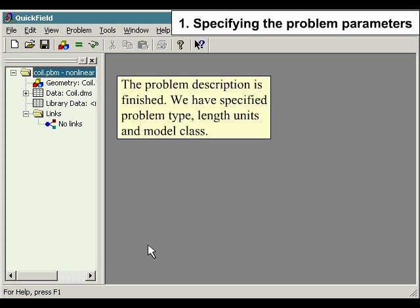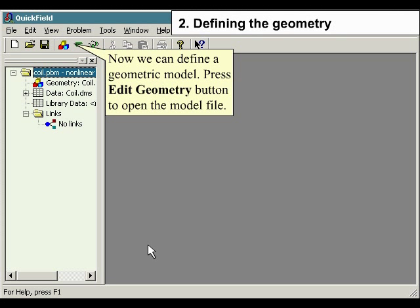We have specified problem type, length units, and model class. Now we can define a geometric model. Press Edit Geometry button to open the model file.